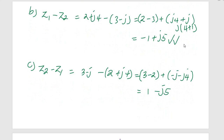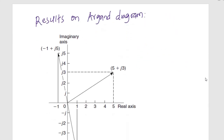For z2 minus z1, we take (3 minus j) subtract (2 + j4). The real parts: 3 minus 2 equals 1. For the imaginary parts, negative j minus positive j4 gives negative j5. So z2 minus z1 equals 1 minus j5.